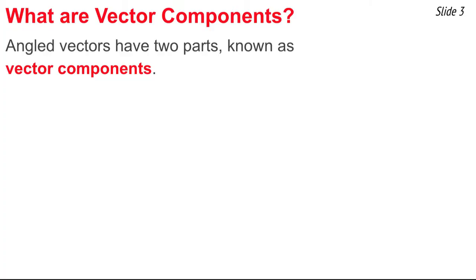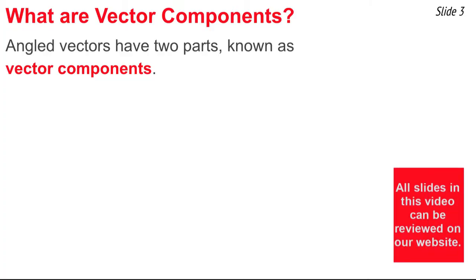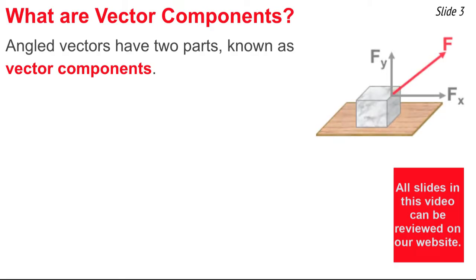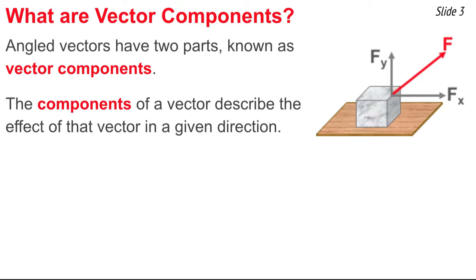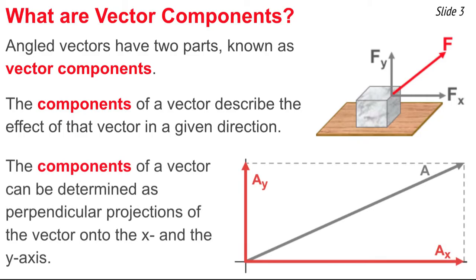In the previous video of this series, we talked about vector components. Let's review. We mentioned that angled vectors have two parts, known as vector components. Here in the diagram, we notice a force vector acting up on a block. The force vector has an x component directed rightward and a y component directed upward. These two vector components describe the effect that this force vector has in a given direction. If you wish to determine the vector components for any vector, you simply have to project the vector onto the x and y axes by sketching perpendicular projections from the arrowhead of the vector perpendicular to the axes.